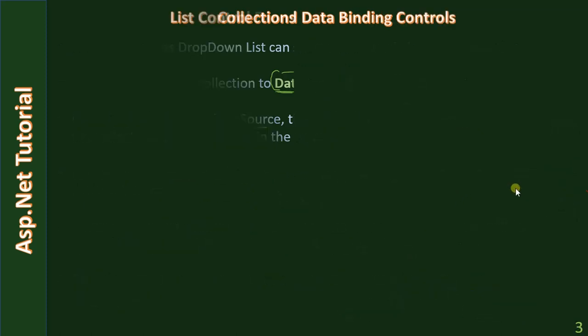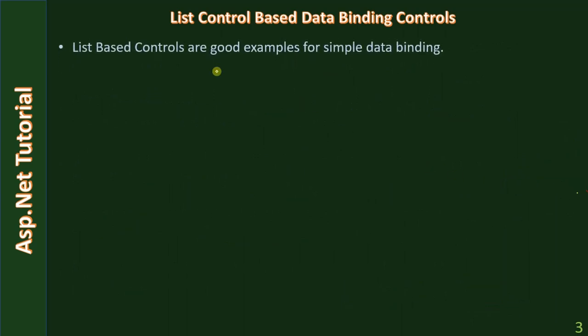List-based controls are good examples for simple data binding, and that's what we are going to do here. We will supply in-memory data.